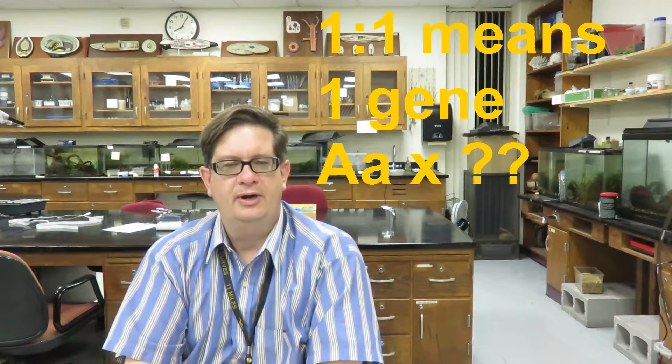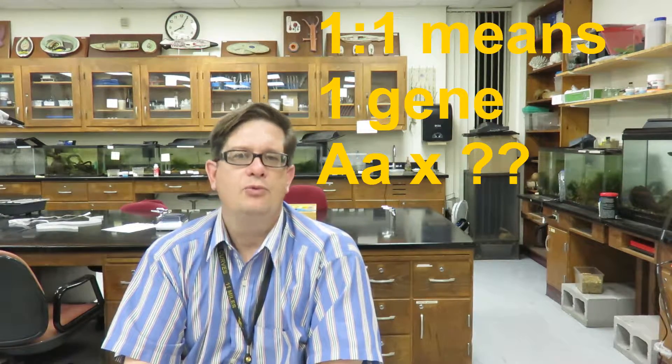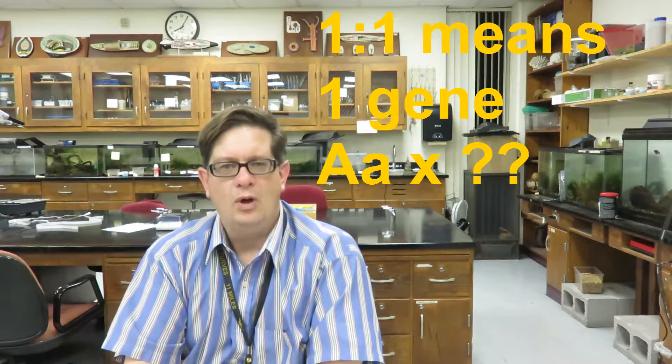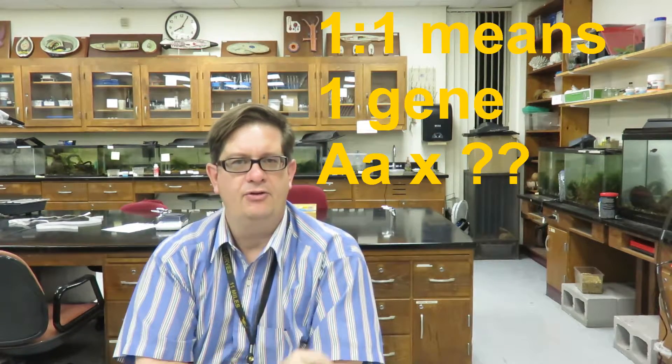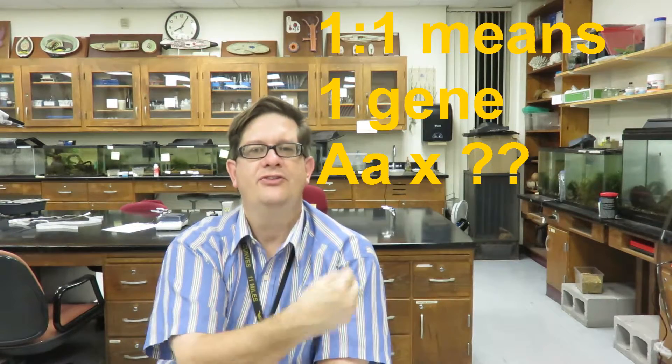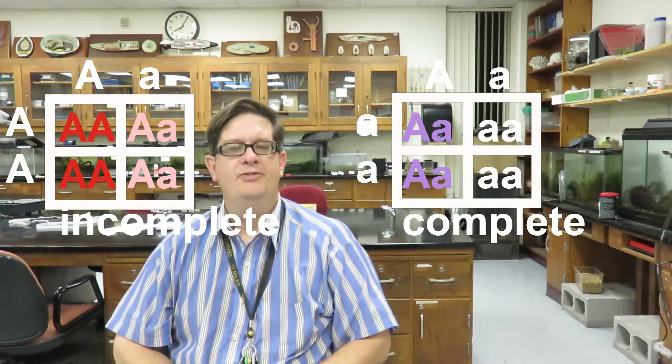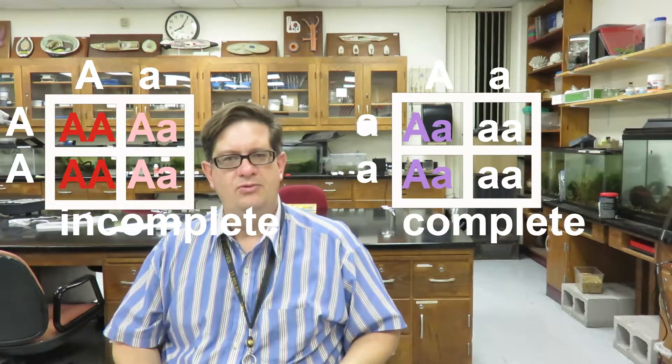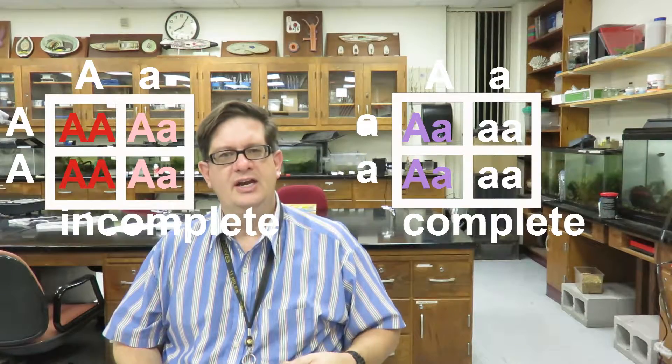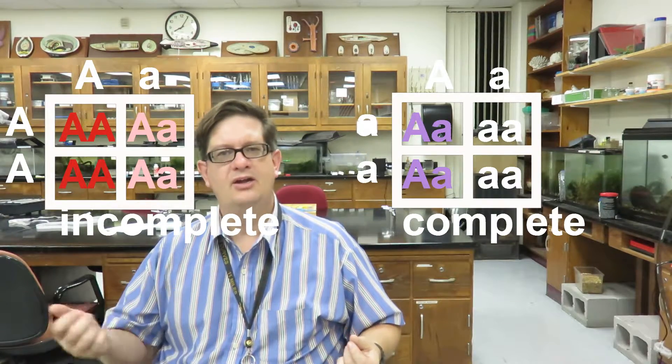If you have a 1 to 1 ratio in the offspring, you're probably dealing with one gene, one parent heterozygous, one parent not heterozygous. The second parent would be homozygous something. But without additional information, you don't know if they're homozygous dominant or homozygous recessive. You don't know if the gene has complete dominance or incomplete dominance.